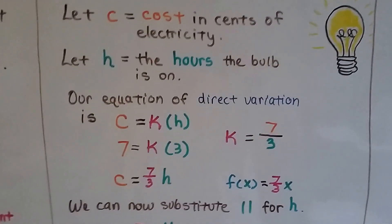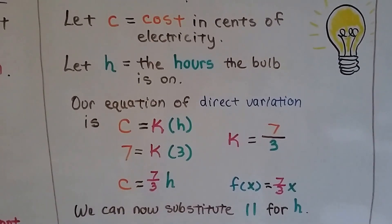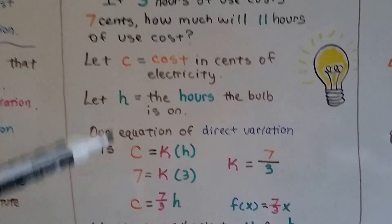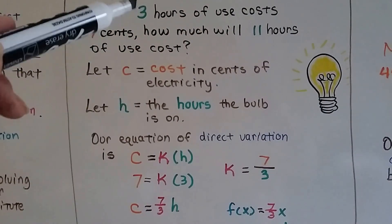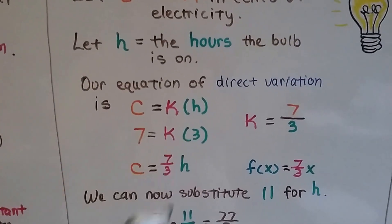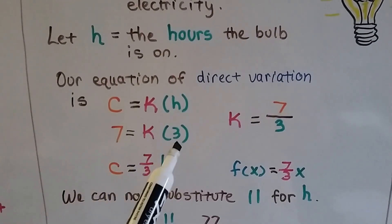Our equation of direct variation, instead of y equals kx, we're going to have C equals kh. We can plug in the values, the 7 cents for the y place, and the 3 for the x place, or for the C and the H, and this is our equation of variation.